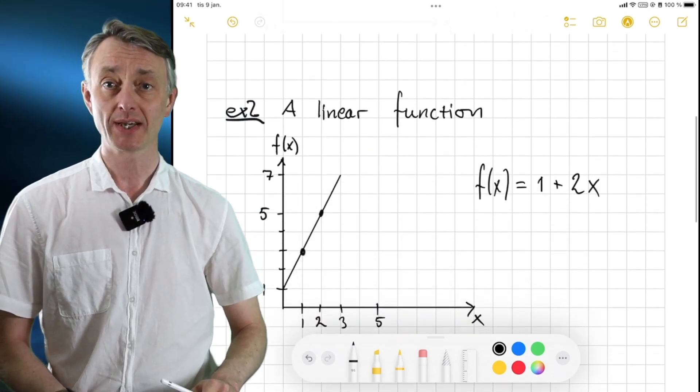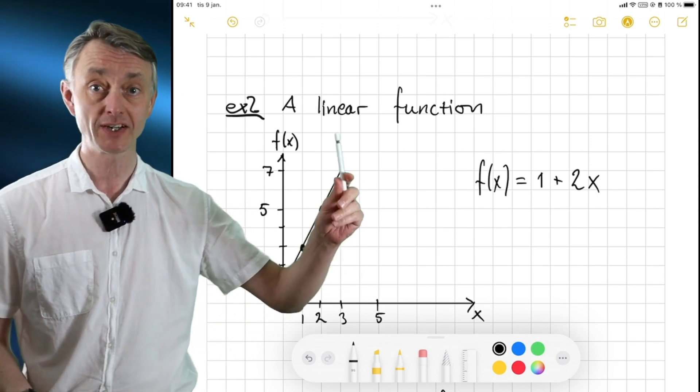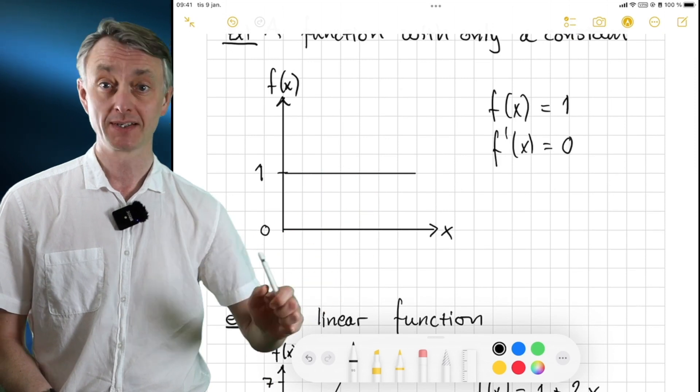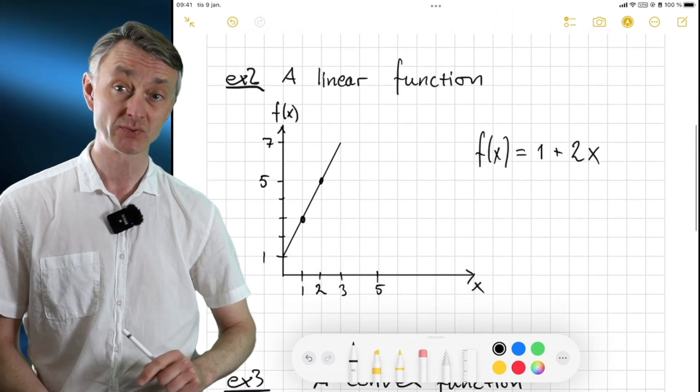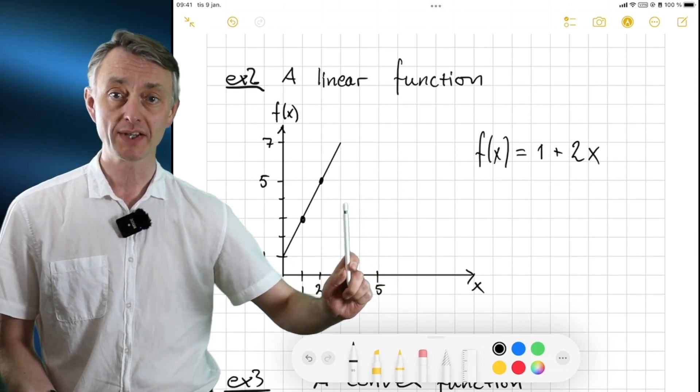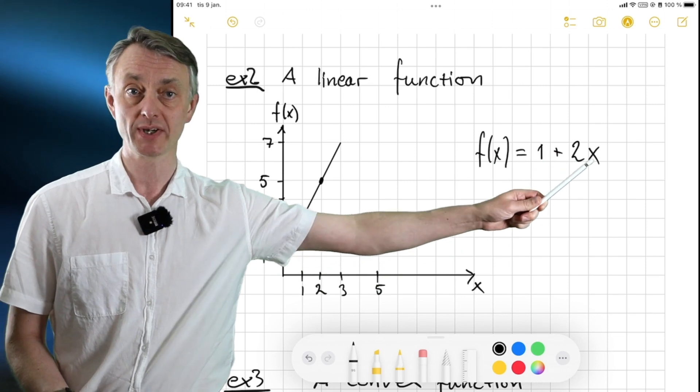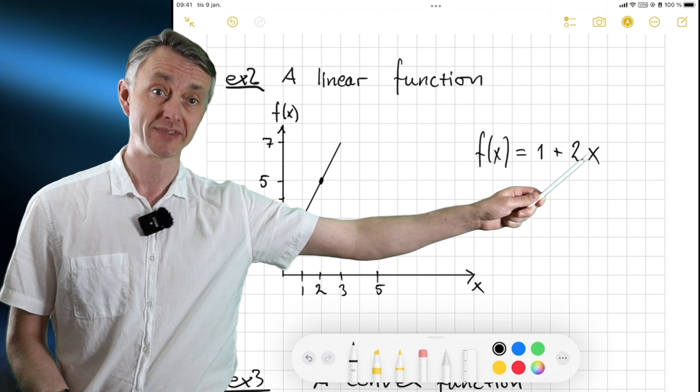Moving on to a perhaps more interesting function. This is a linear function. Of course, this is also a linear function, but it's completely flat. This function here is linear as well, but it is not flat. And the one I have drawn here is f of x is 1 plus 2x. So there's a constant 1, and here we have 2 times x.